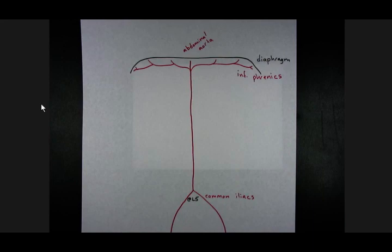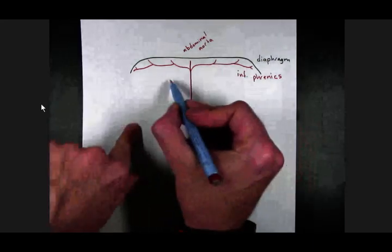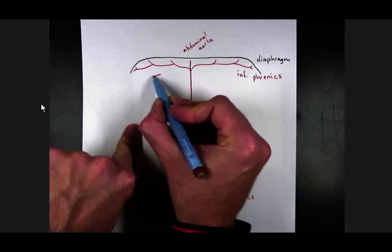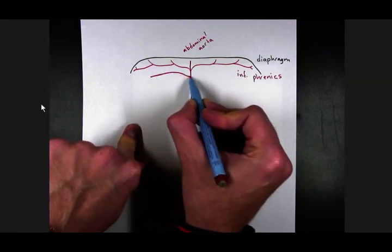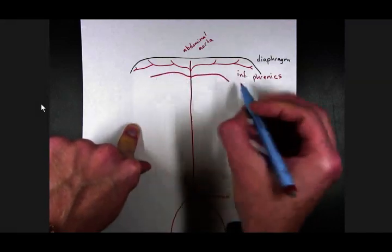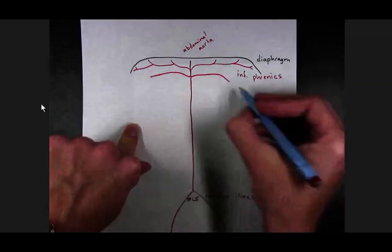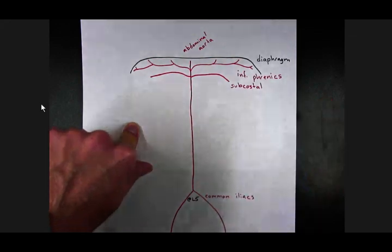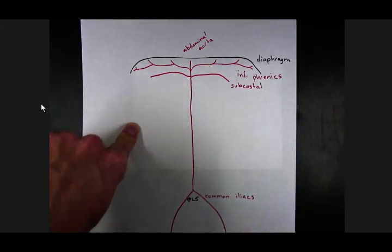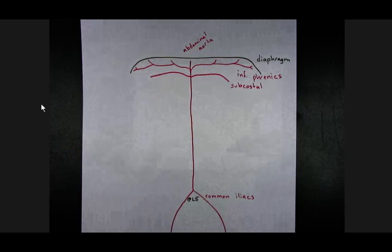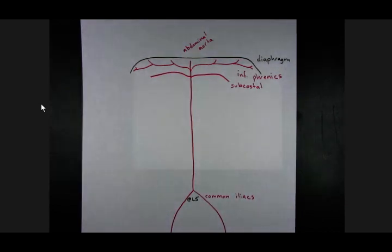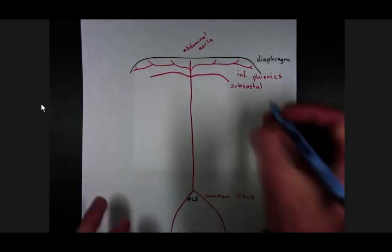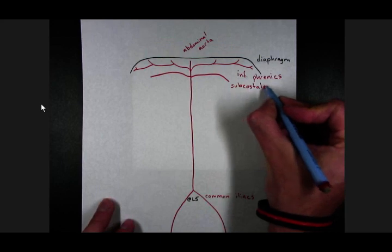Then, distal to that would be subcostal artery. That really doesn't show up as red, does it? Subcostals.